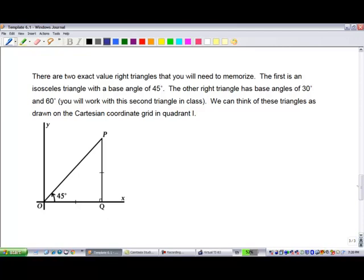There are two exact value triangles you need to know. This is an isosceles triangle with base angles of 45 degrees. Let's pretend that side is 5. Because it's an isosceles triangle, the leg lengths are the same, 5 and 5. We can calculate r using Pythagoras. R squared is 25 plus 25. R squared is 50. R is the root of 50, which has a perfect square of 25 and root 2, so that's 5 root 2.